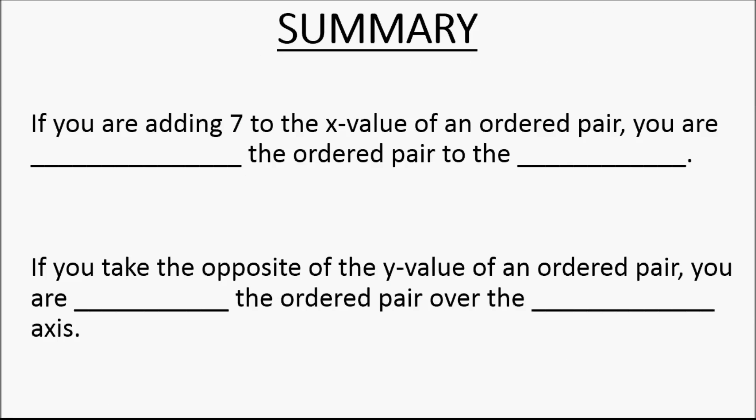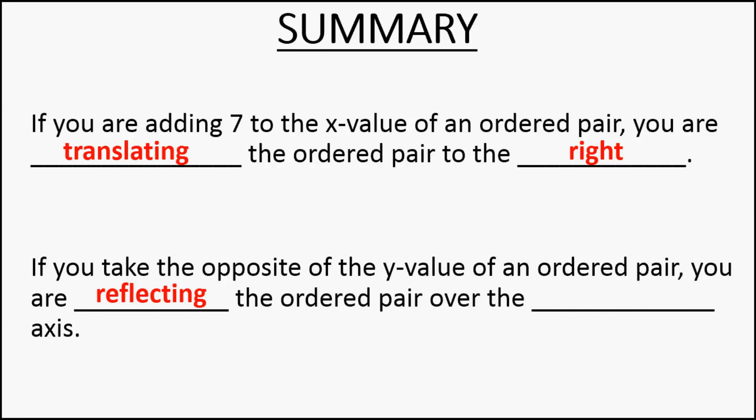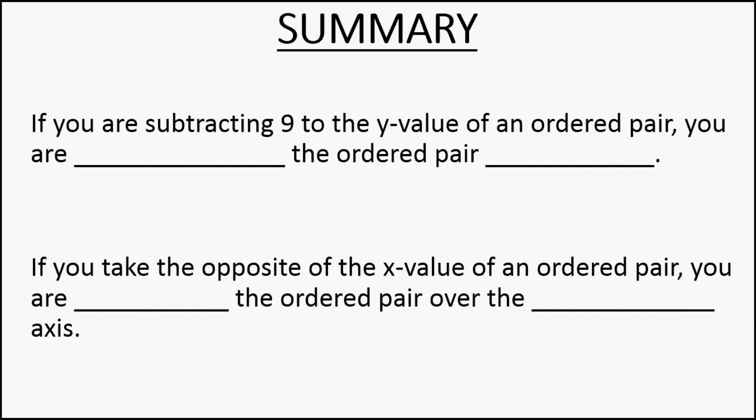So a summary. If you are adding seven to the x-value of an ordered pair, you are translating. Adding or subtracting numbers to x's or y's means we're translating. If we're adding seven to the x-value, x deals with left or right, and adding seven is a positive direction on the x-axis — so you're moving it to the right. If you take the opposite of the y-value of an ordered pair, that's a reflection. If we're taking the opposite of y, that means we're keeping x the same and reflecting it over the x-axis.